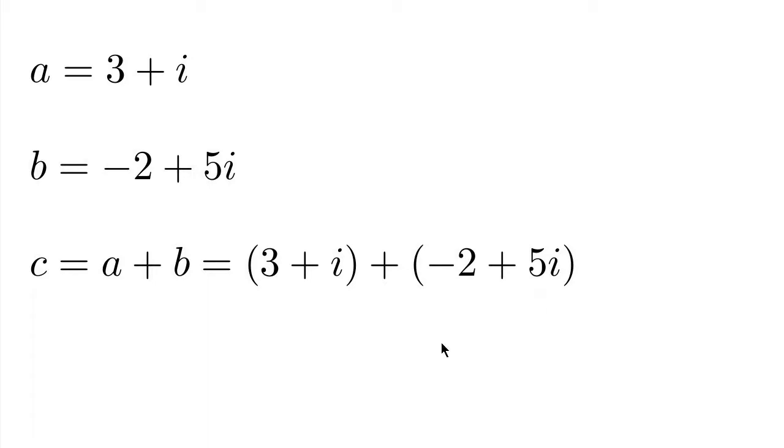In order to add these two numbers, what we do is add their real parts and then we add the imaginary parts. We get from 3 plus negative 2, we get 1. And from i plus 5i, we get 6i.